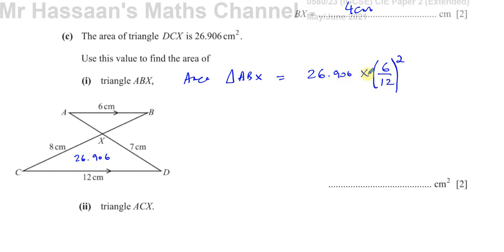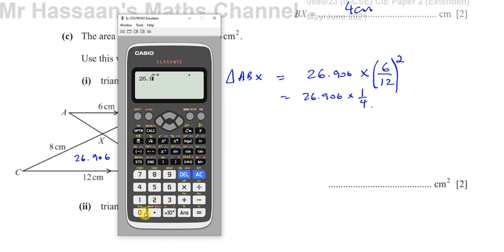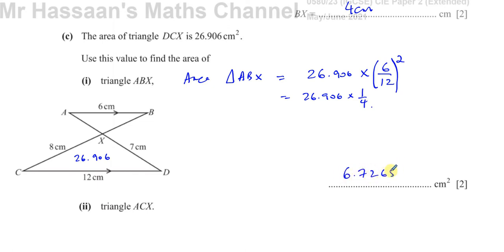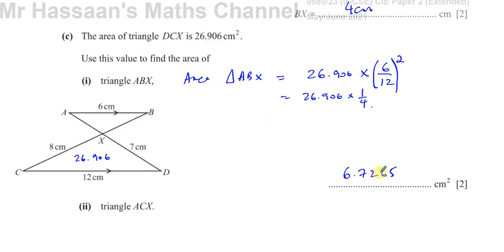The ratio of areas is the square of the ratio of lengths. Since the length ratio is a half, the area ratio is a quarter. So the area of ABX equals 26.906 times (6 over 12) squared, which gives us 6.7265 centimeters squared. I'll leave it in this exact form since the question gave the value in that form, rather than rounding to 3 significant figures.